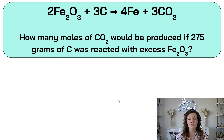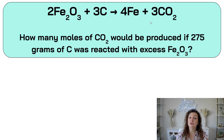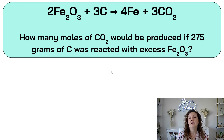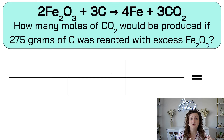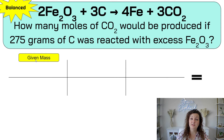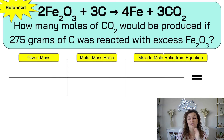Go ahead and try this one start to finish. Pause this, and then we'll go over the answer in just a second. All right, let's check it out. This is the same chemical equation, so we already know it's balanced. By our roadmap we're going to have two T's in our bridge — a two-step problem. Go ahead and start setting up your bridge. Remember the roadmap: we're going to go from our given mass, to our molar mass ratio, to the mole-to-mole ratio that comes from our balanced chemical equation.